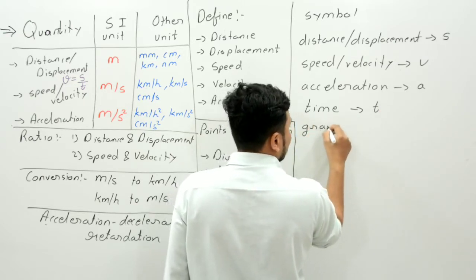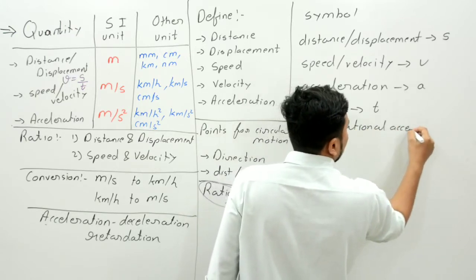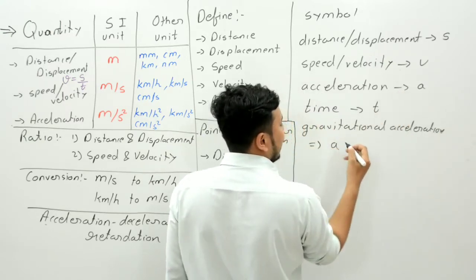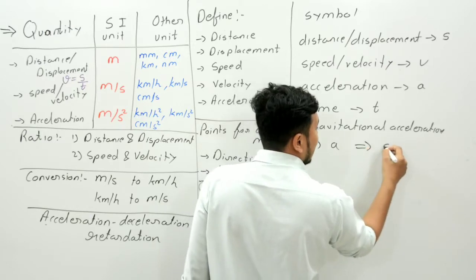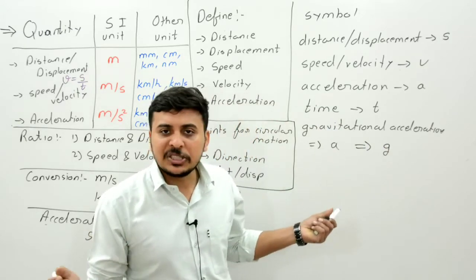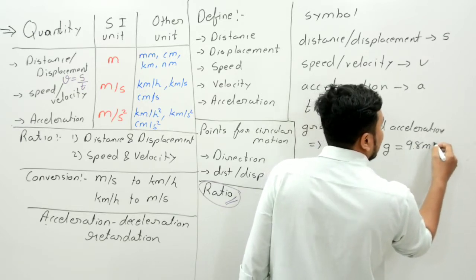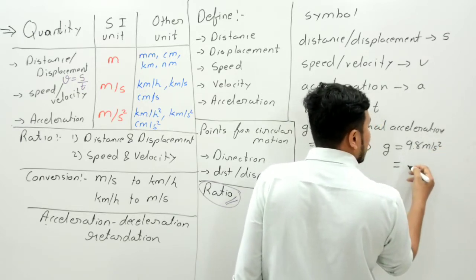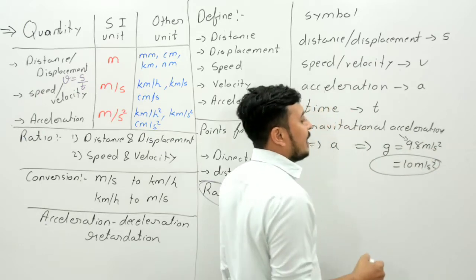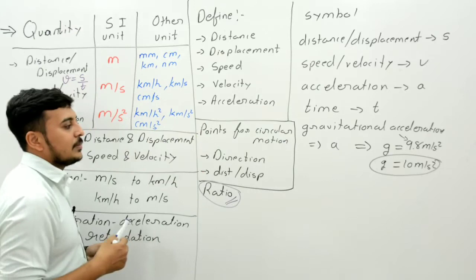One more thing we discussed is gravitational acceleration. The symbol for general acceleration is A. But sometimes we use small g for gravitational acceleration, and when it is small g, the value is fixed: 9.8 meters per second square. Sometimes in problems, g is approximated as 10 meters per second square to make calculations easier.